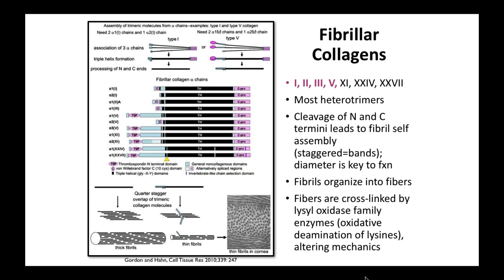Most fibrillar collagens are heterotrimers — three strands come together to form a rigid triple helix, although some are homotrimers. When synthesized, the three chains come together to form a fibril, with processing of the N and C terminal ends leading to full assembly. These fibrils will then self-assemble into fibers, which are cross-linked by members of the lysyl oxidase family, forming very thick fibers. These fibers are often heterogeneous — they may contain collagen 1, collagen 3, and collagen 5, for example.